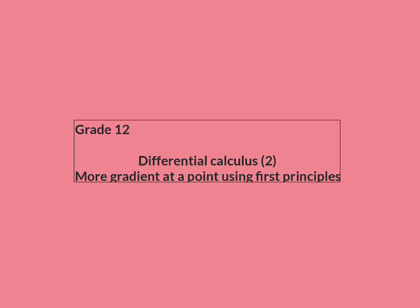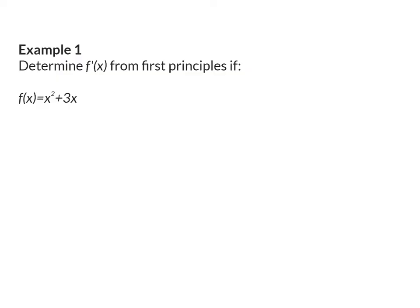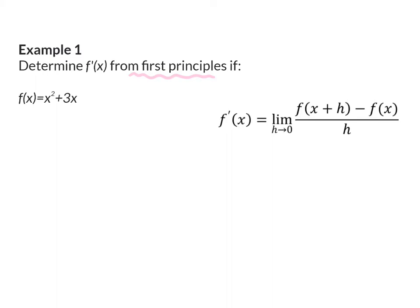In today's lesson we are continuing to determine the gradient of a tangent at a point using first principles. Example 1: determine the derivative from first principles if the function is given as x squared plus 3x. Here you need to realize that from first principles implies that you have to use your new formula. The given function here is a parabola and for a parabola the gradient changes constantly.